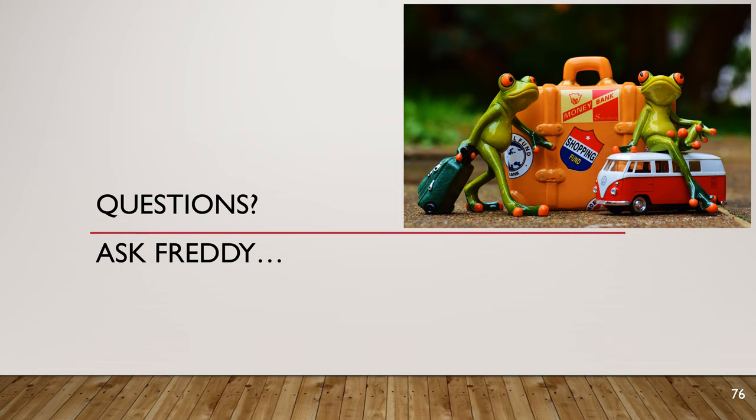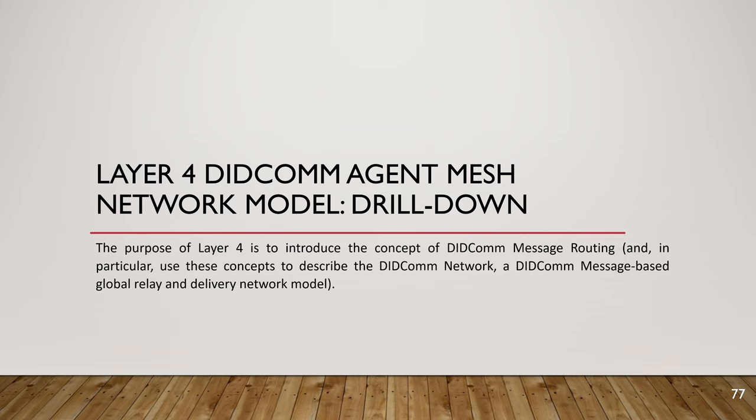That's the end of layer three. All we've done is take layer two — the ability to send a DIDCOM message from one agent to another — and added the ability to attach content to that message. Layer four: the white paper should have stopped at layer three, which gave you everything you needed for point-to-point messaging between two agents using DIDCOM. But then somebody on LinkedIn asked how I would extend the DIDCOM architecture reference model to support LibP2P — a mesh networking type transport.